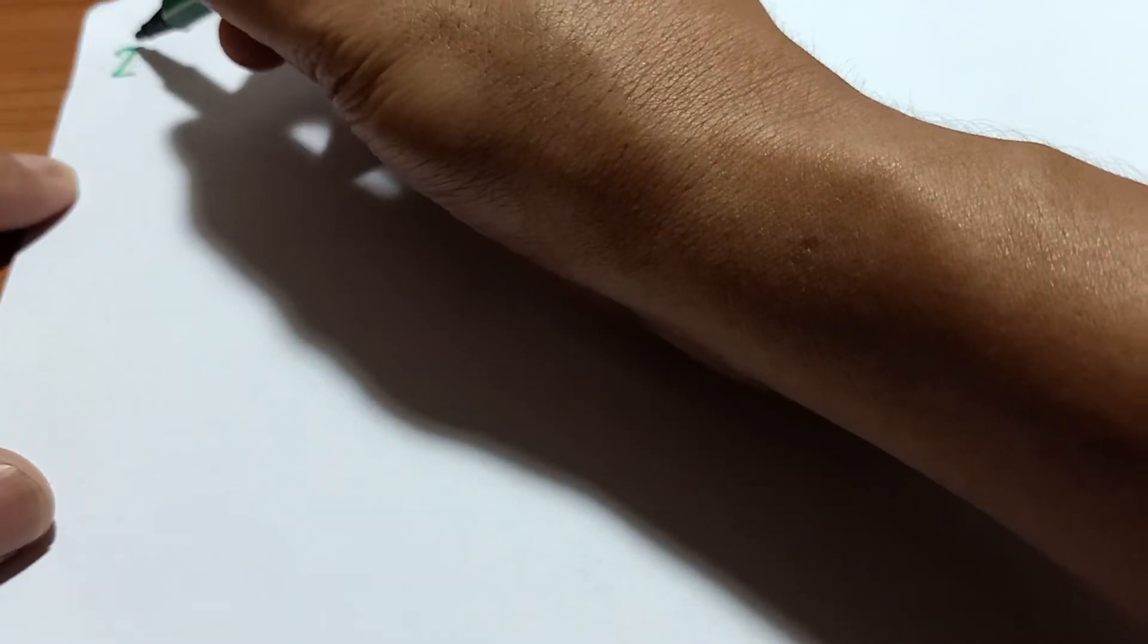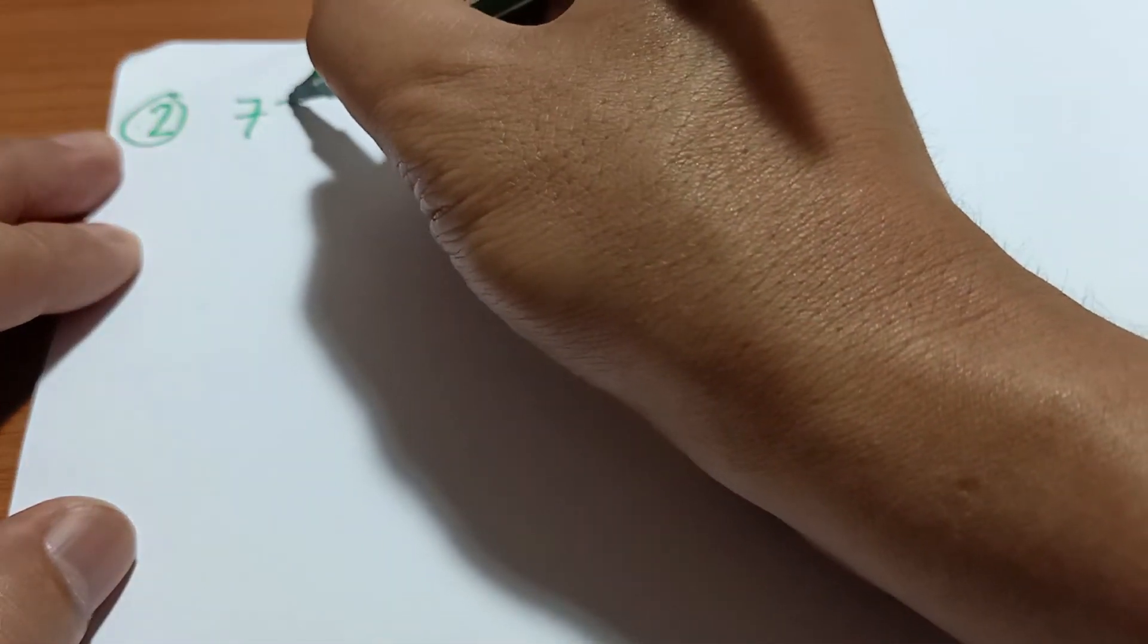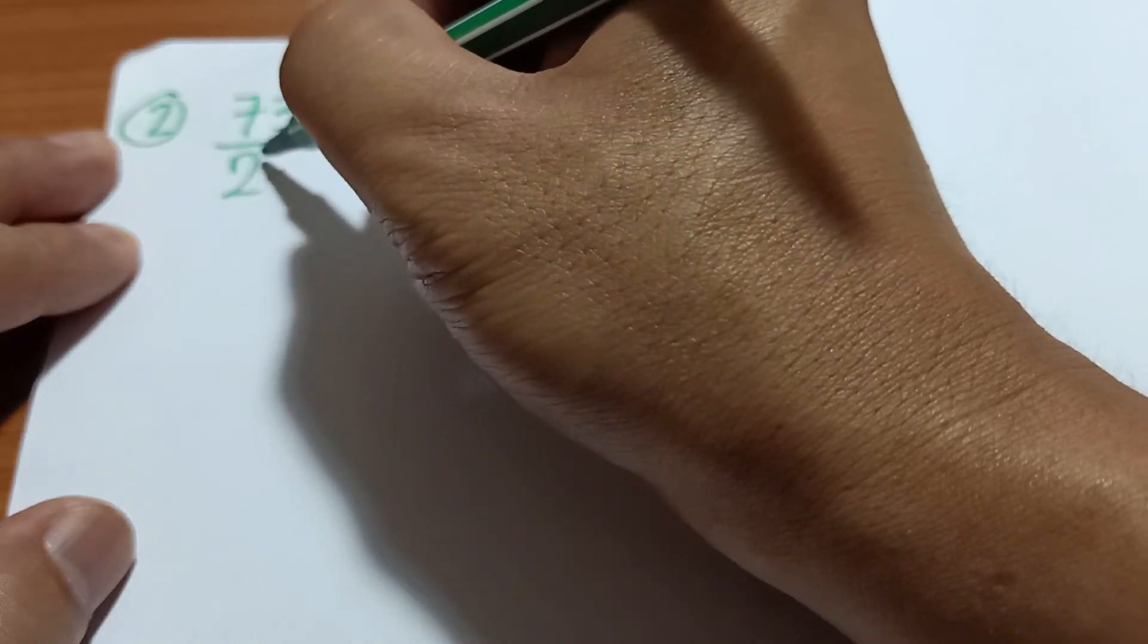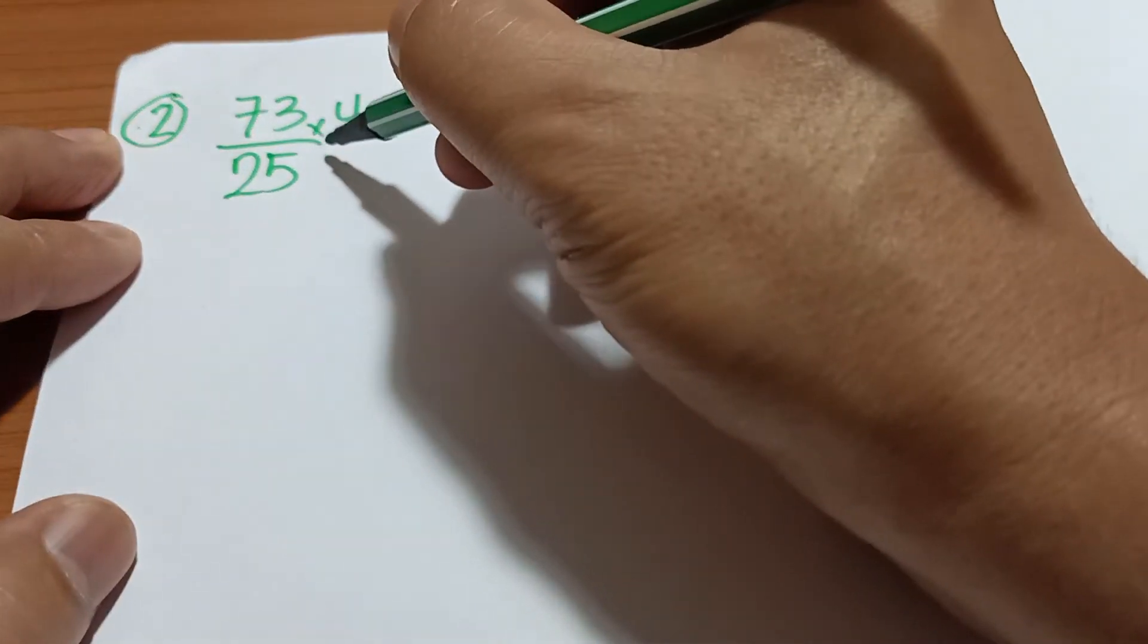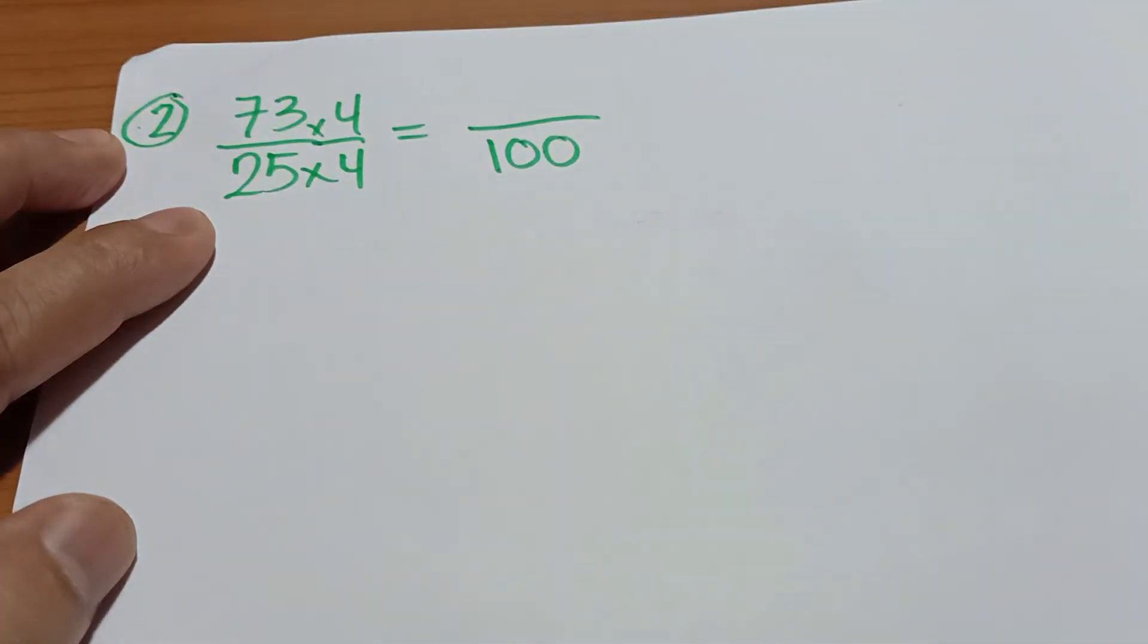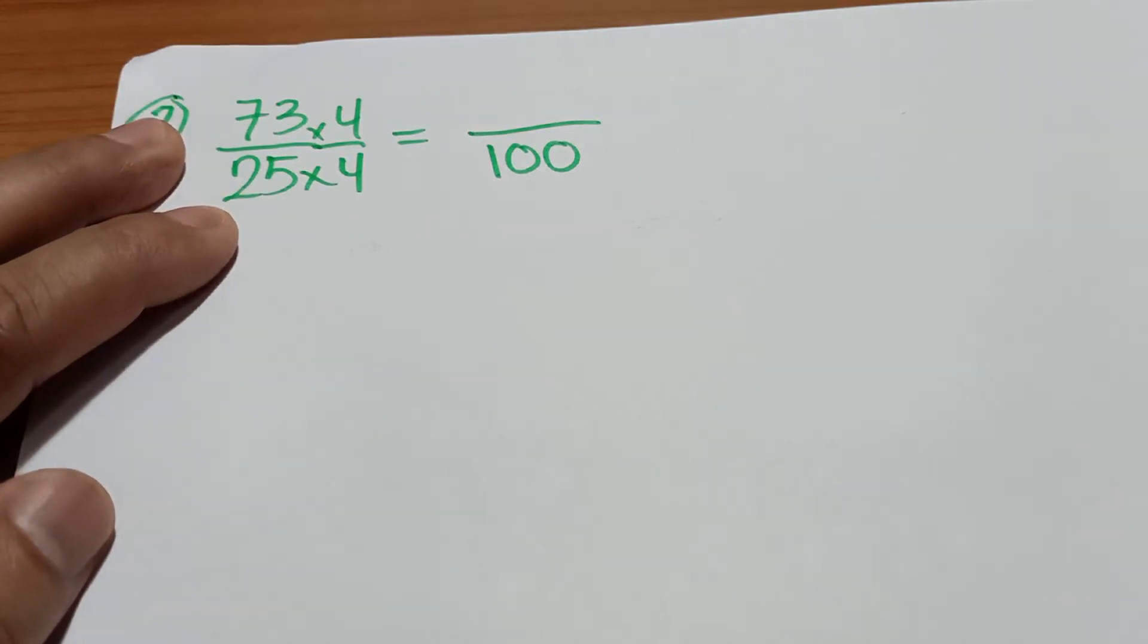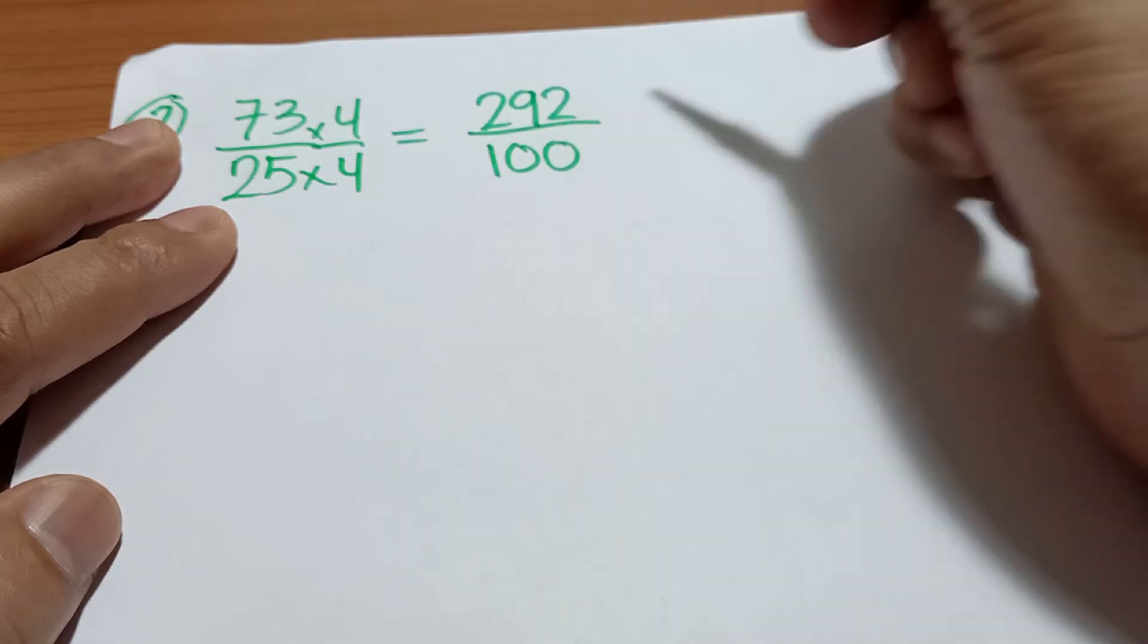Okay, let's take another example. Example number 2: if you have 73 divided by 25. So again, the method is just multiply both the numerator and the denominator by 4. So your denominator will become 100, and then 73 times 4 is 292.